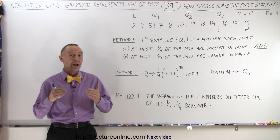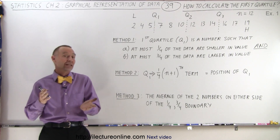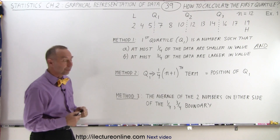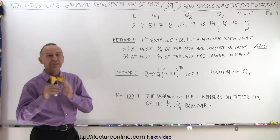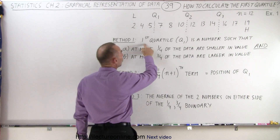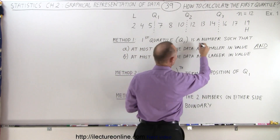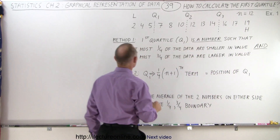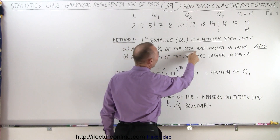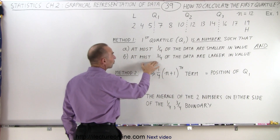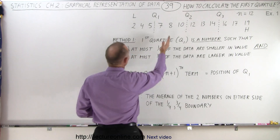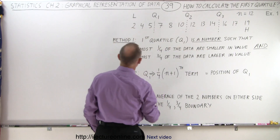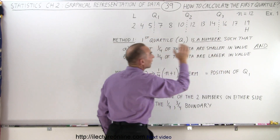Welcome to ElectronLine. Let's explore how to find the first quartile. There are three methods: method one, method two, and method three. All three methods are valid and sometimes they give you slightly different answers. Method one tells us that the first quartile is a number such that two conditions must be true: at most one quarter of the data are smaller in value, and at most three quarters of the data are larger in value.